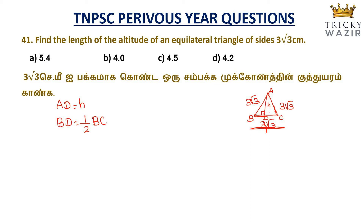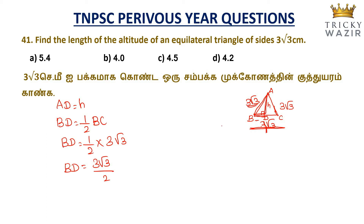The altitude bisects the base. BD is equal to half of BC, and BC value is equal to 3 root 3. So BD equals 3 root 3 divided by 2. Now we will find the H value using the Pythagorean theorem: AB² equals AD² plus BD².